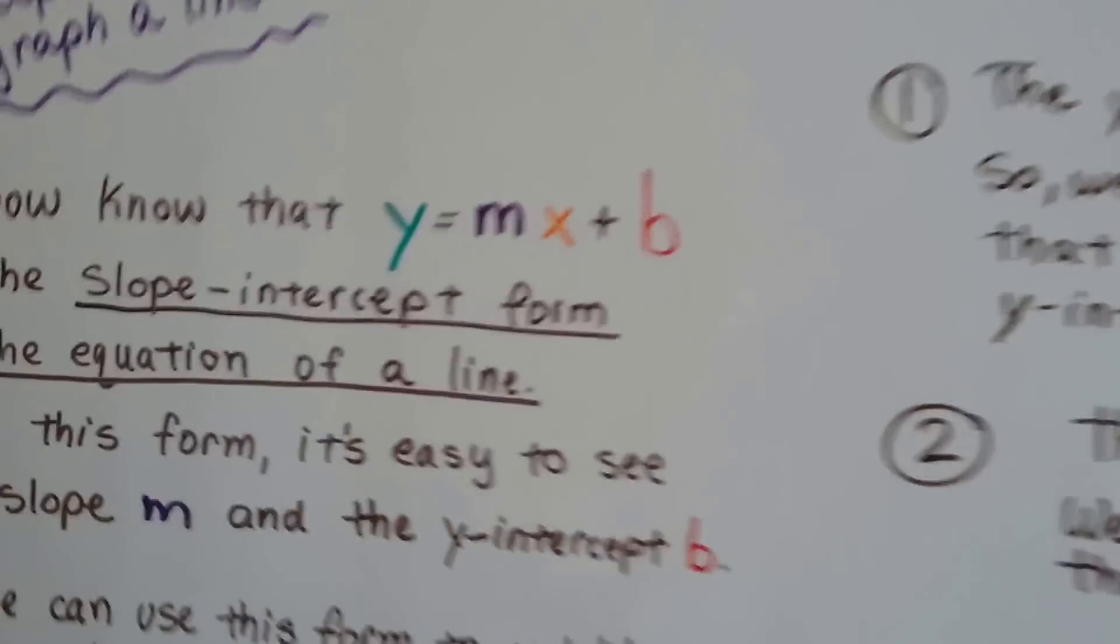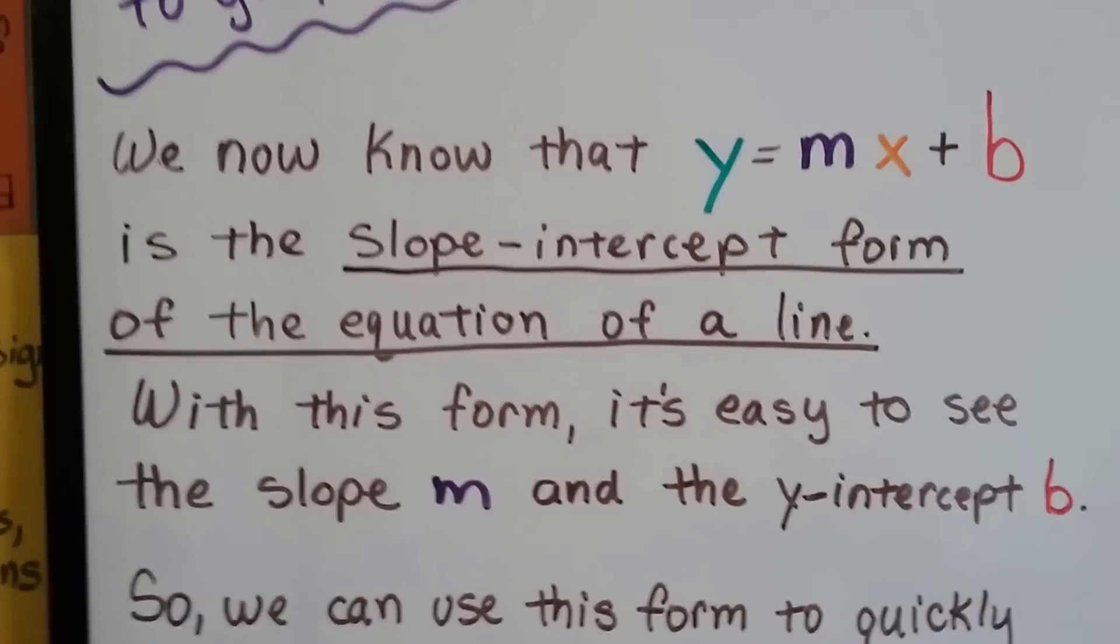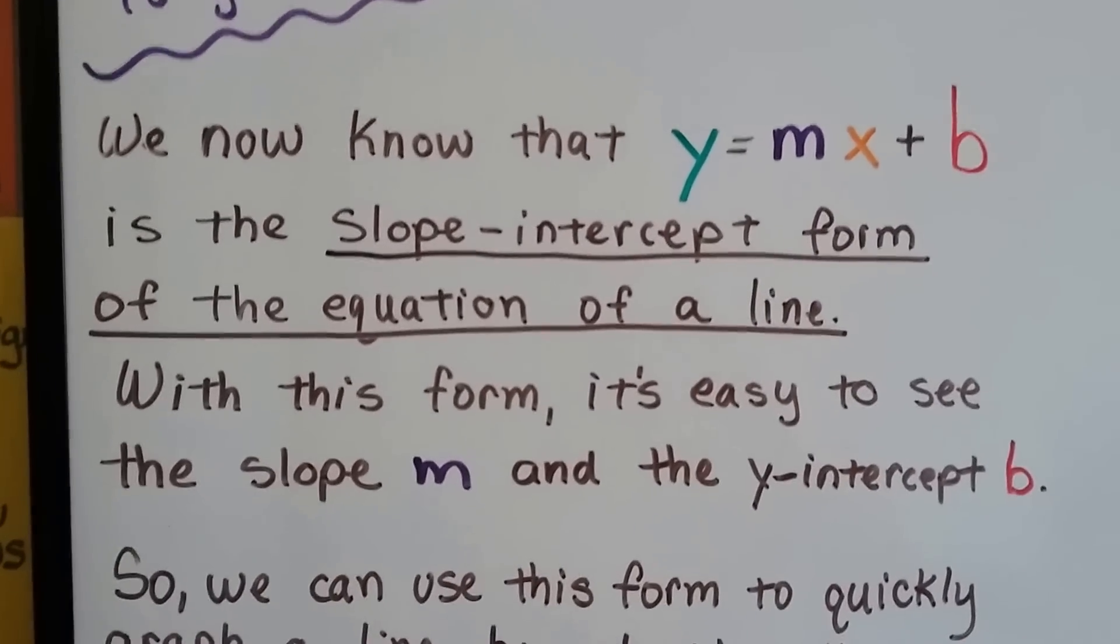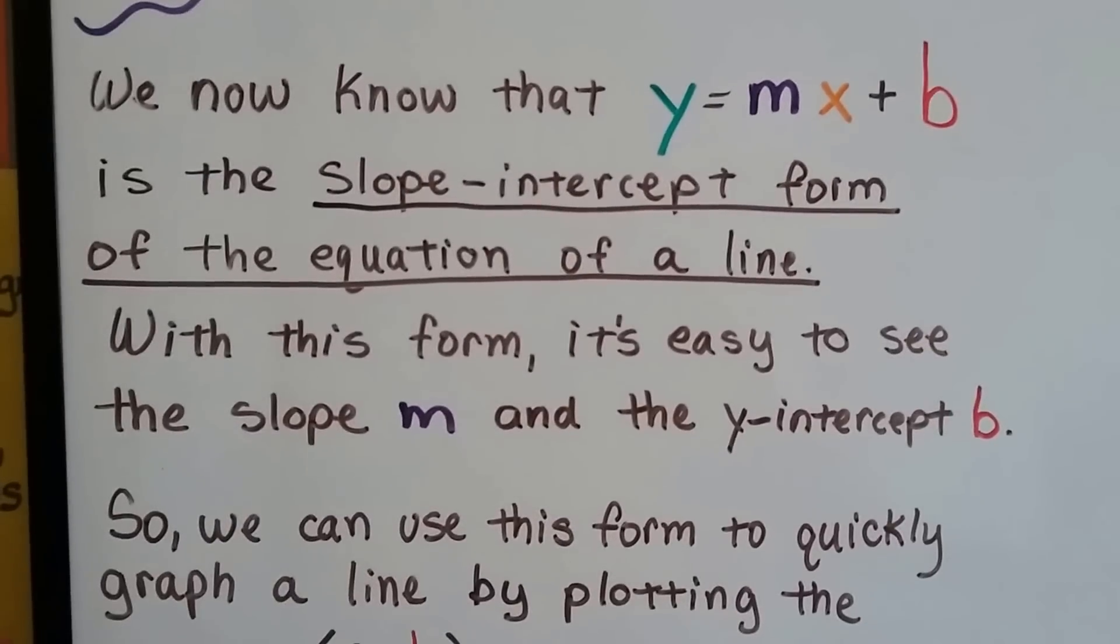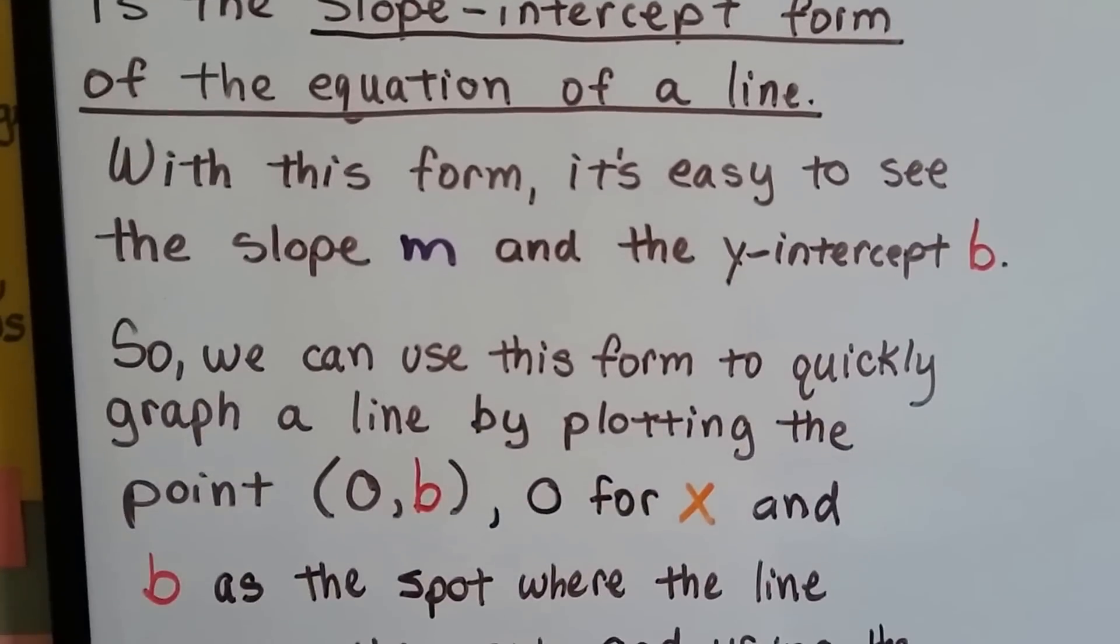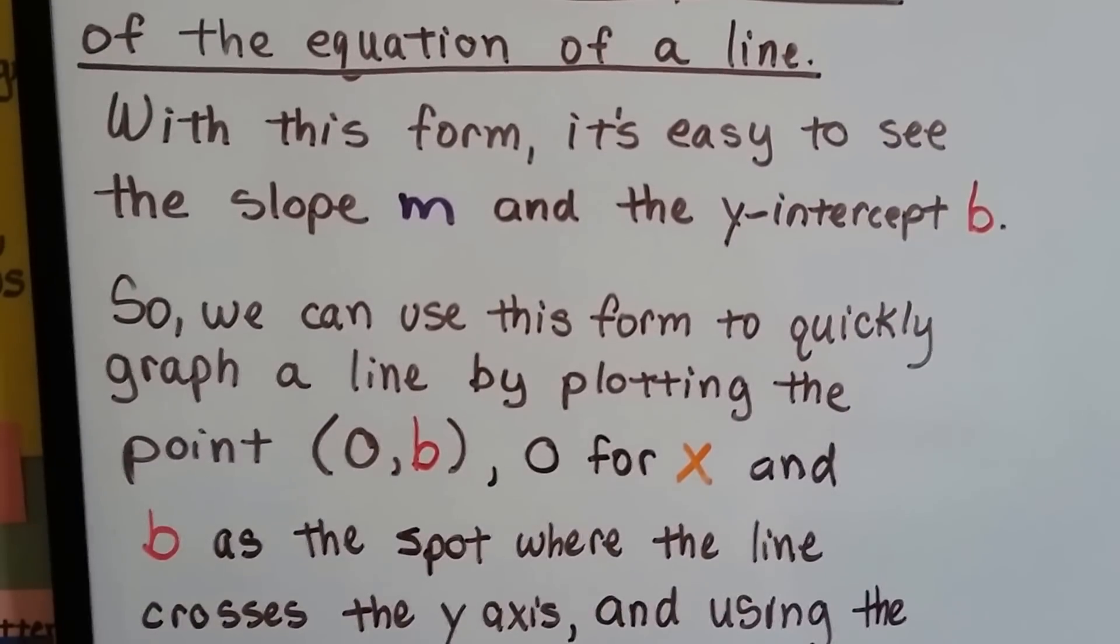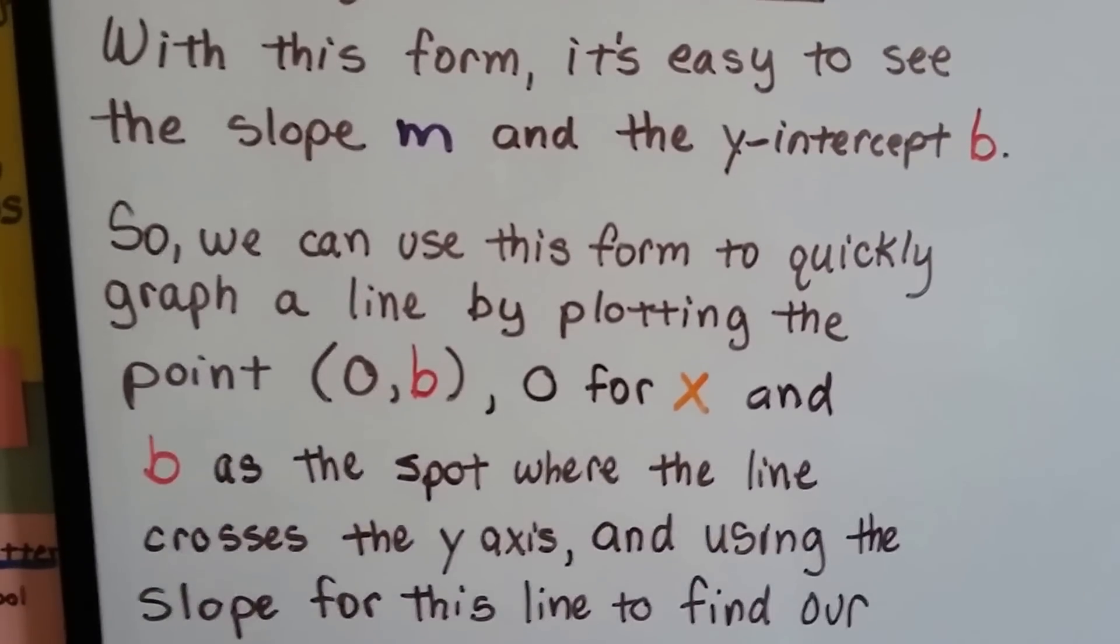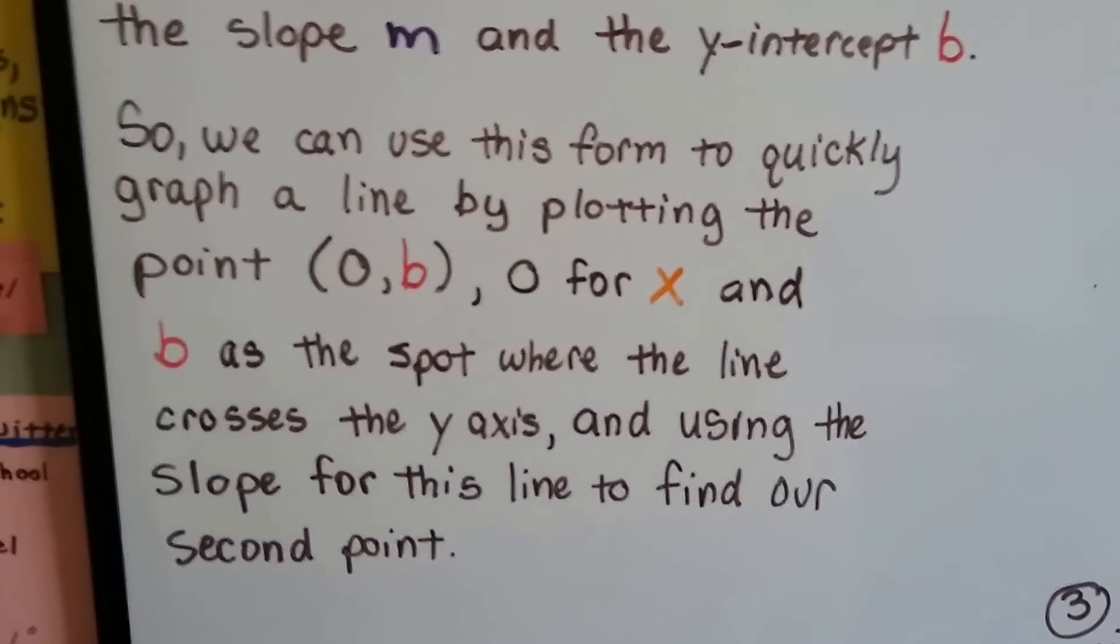So we now know that y equals mx plus b is the slope-intercept form of the equation of a line. And with this form, it's easy to see the slope m and the y-intercept b. We can use this form to quickly graph a line by plotting the point 0b, 0 for x, and b as the spot where the line crosses the y-axis, and using our slope for this line to find our second point.